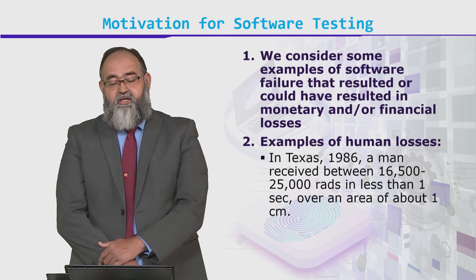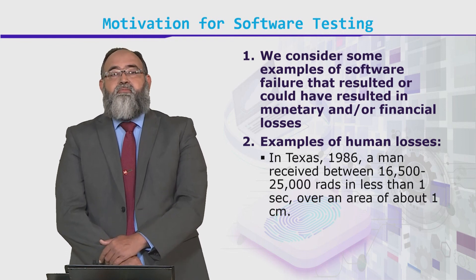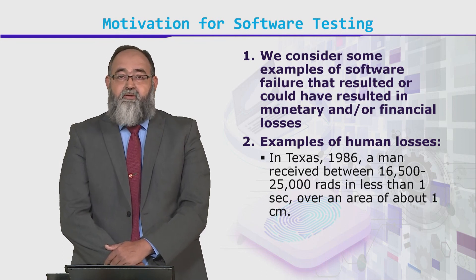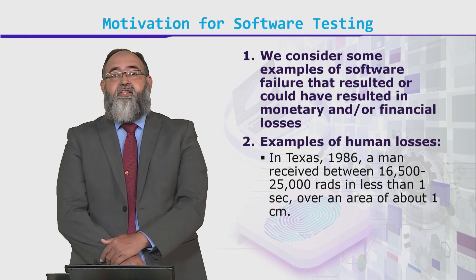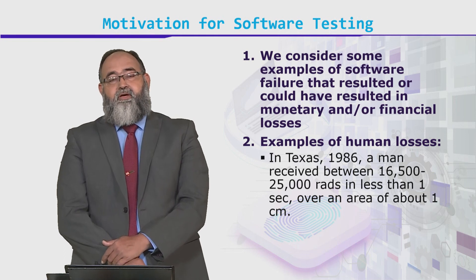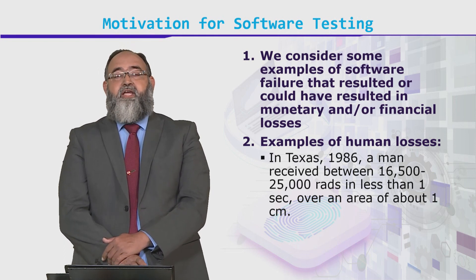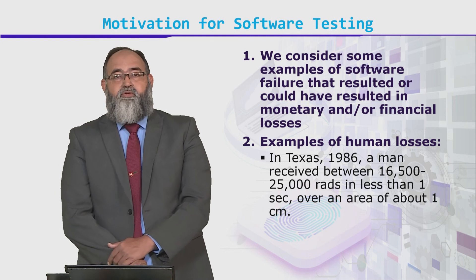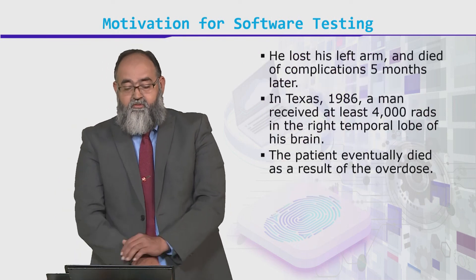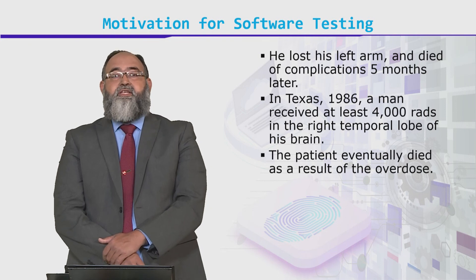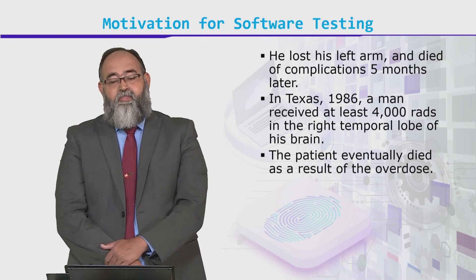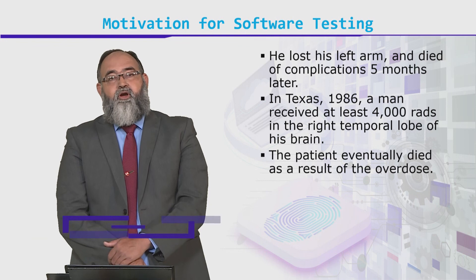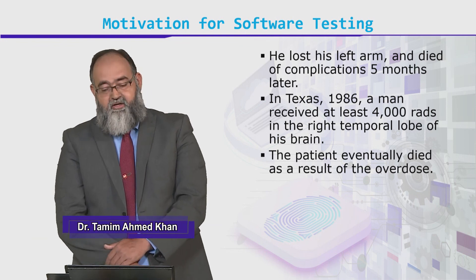For example, human loss. There was a radiation machine developed to give radiation to cancer patients. The only problem was a reduction factor that was wrong. One patient received excess radiation, lost his left arm, and died after five months. Another received radiation in his brain and died straight away.